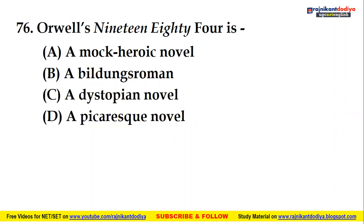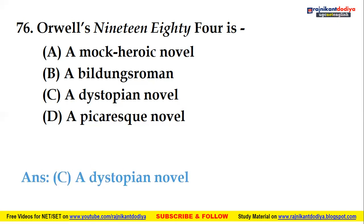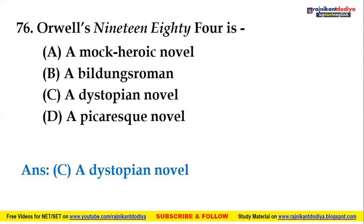First of all, Orwell's 1984 — is it a heroic novel, a roman à clef, a dystopian novel, or a picaresque novel? The right answer is: it's a dystopian novel. This novel 1984 by Orwell was published in 1949, and it is a dystopian social science fiction novel.